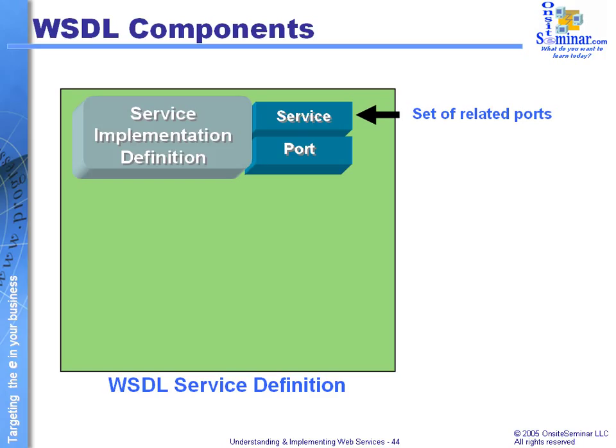We also need to know how it can be addressed — binding information, URL pattern information, and potentially the actual IP address of where the service happens to be. So we have port information and service-related information, all of which identifies where the actual service is located.